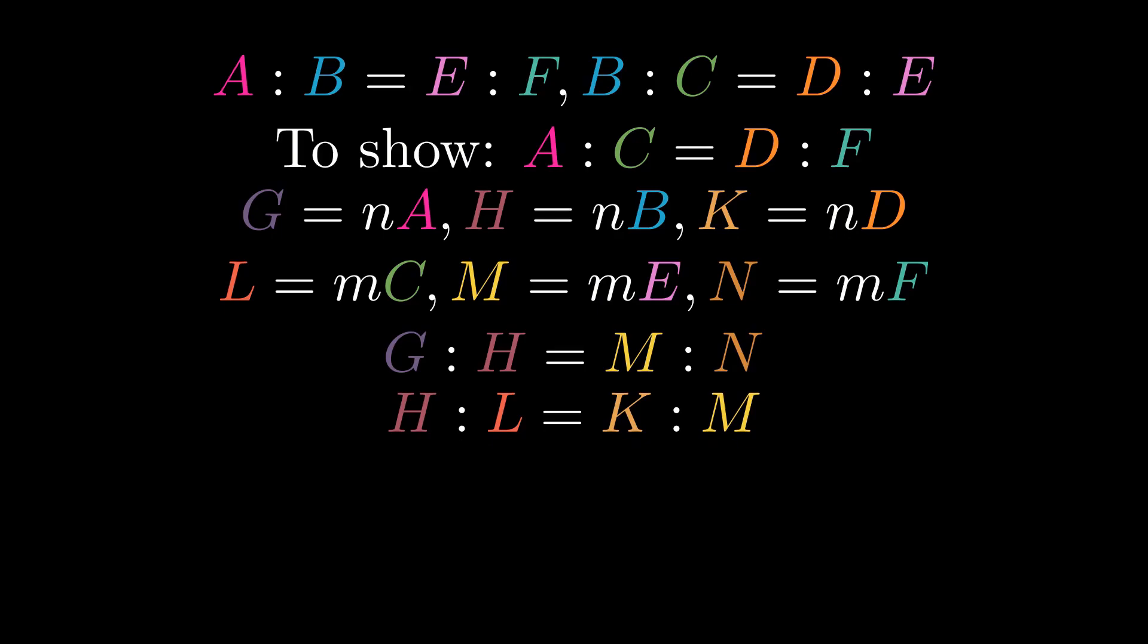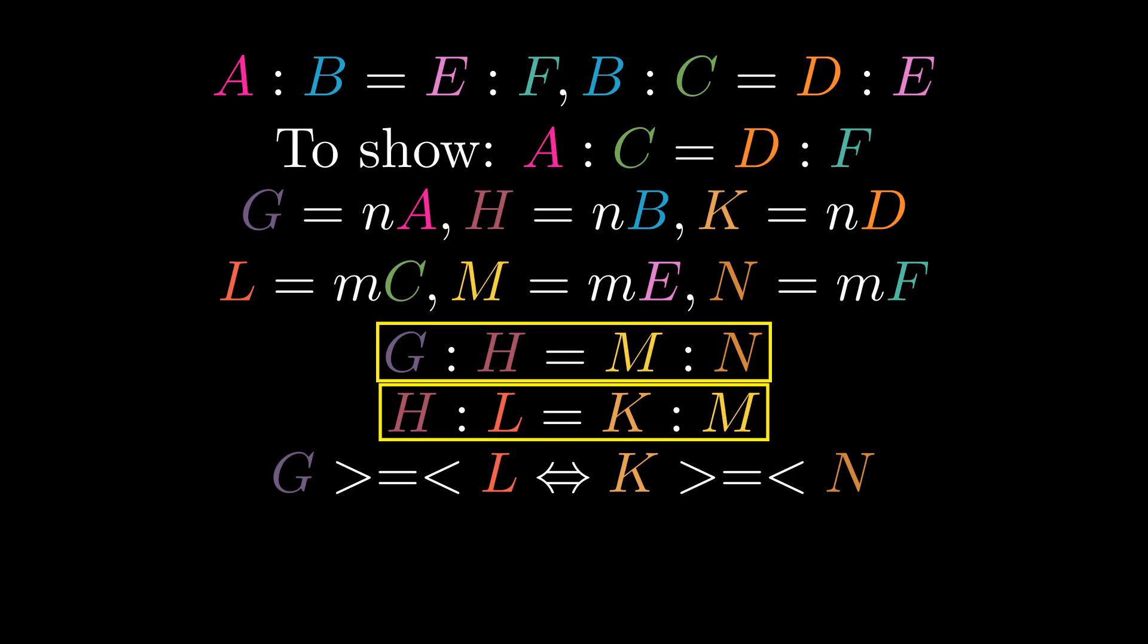So, overall, we have a perturbed proportion where G to H is proportional to M to N, and H to L is proportional to K to M. So, by proposition 5.21, if G is greater than, equal to, or less than L, K is greater than, equal to, or less than N.